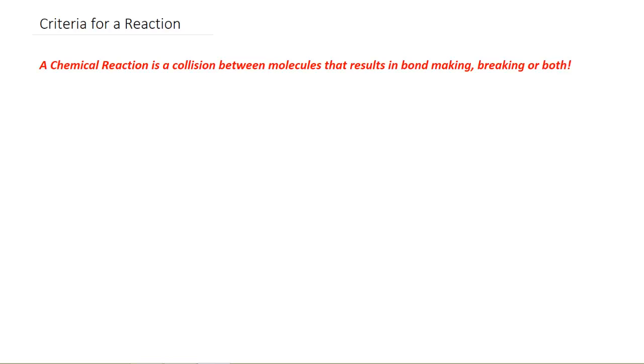Hi, chemistry students. We just finished figuring out what a chemical reaction is at the molecular level. It's a collision between molecules, and that collision's got to make or break, or make and break bonds. All those things can happen at once.